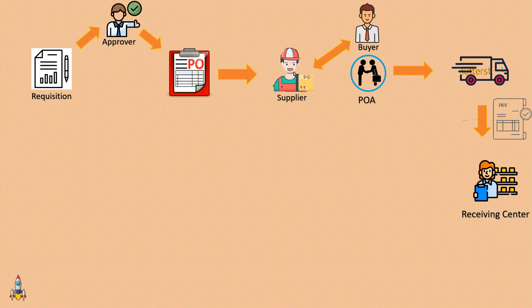Along with the goods, the supplier sends a document called an invoice — a bill to the buyer listing the items ordered and the total amount to be paid, similar to a restaurant bill. The receiving center receives the items and creates an internal document called a receipt, which records what items were received from the supplier. For example, if five keyboards are received, the receiving team creates a receipt with the item keyboard and a quantity of five, and links it to the corresponding purchase order.